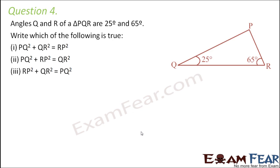Question number 4. Angles Q and R of a triangle PQR are 25 degrees and 65 degrees. Write which of the following is true. Now this is 25 degrees and this is 65 degrees.